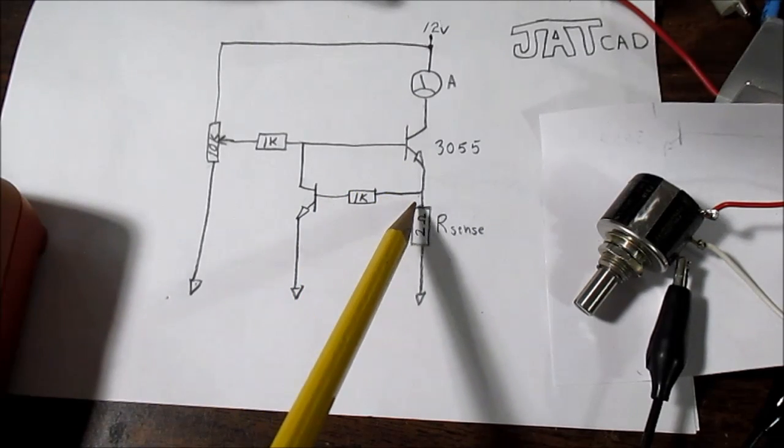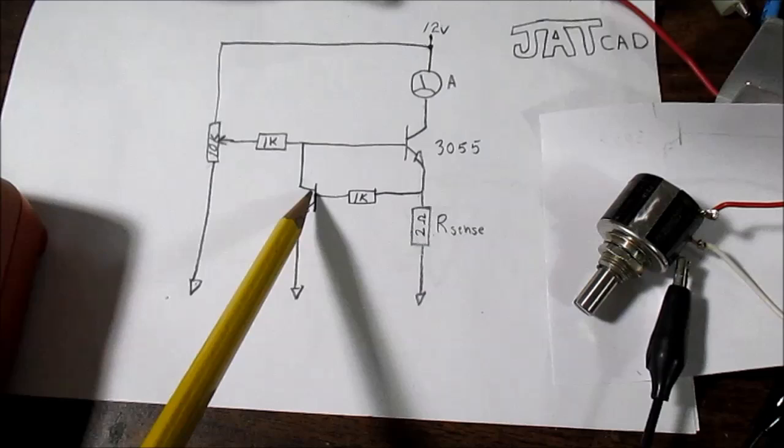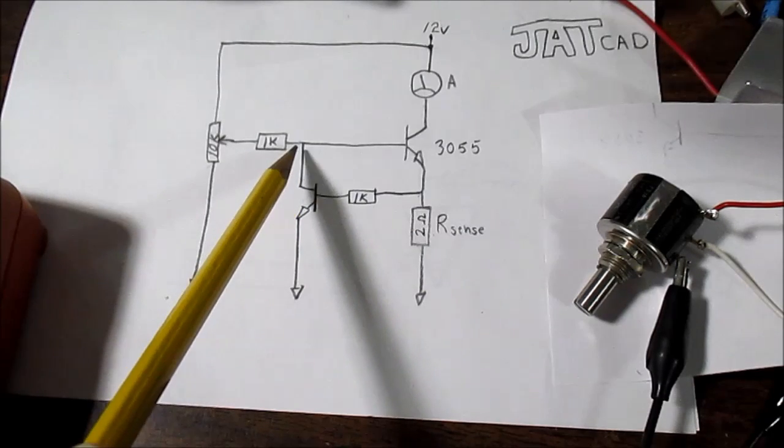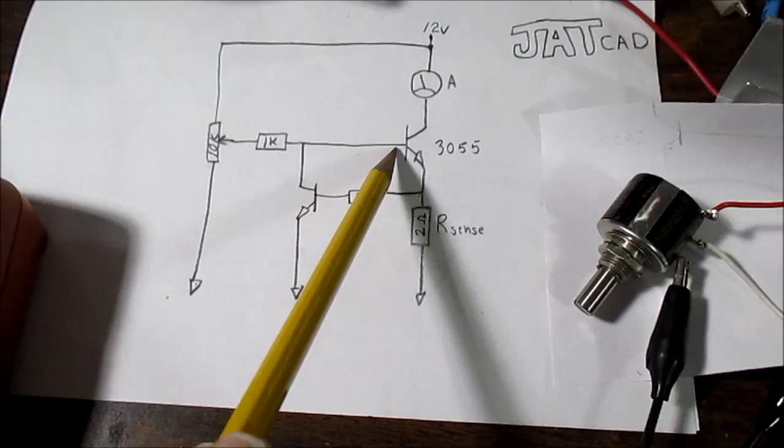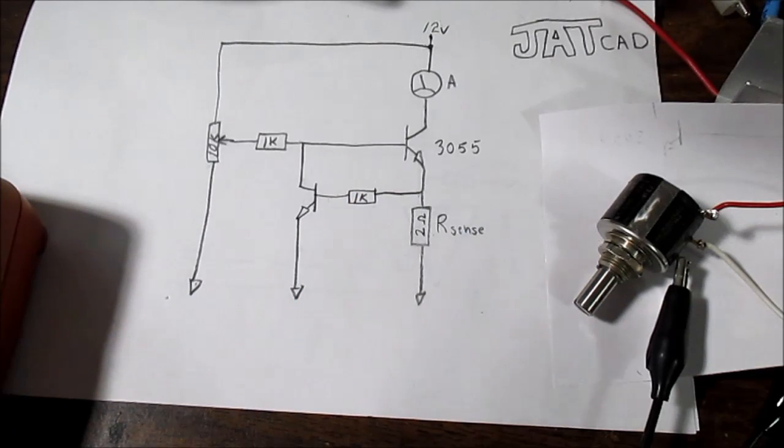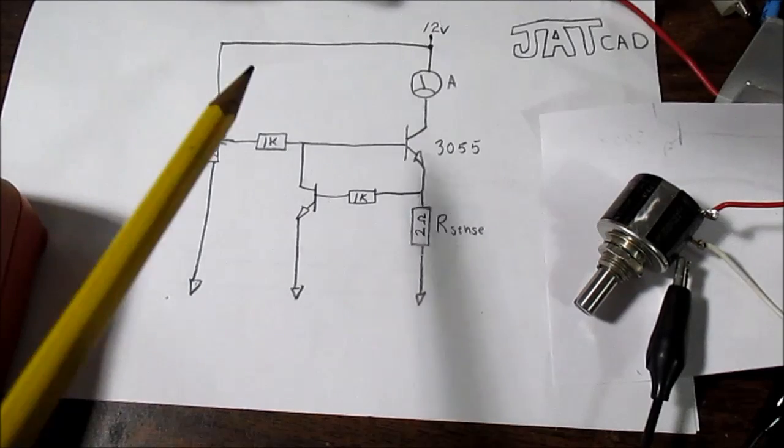The higher the current, the more this is going to shunt the current away from the power transistor. So that's pretty much it. It's very simple operation.